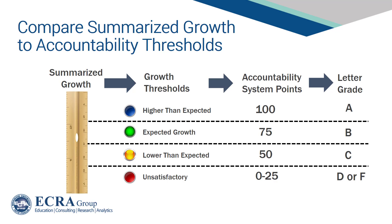Existing publications suggest growth is likely to be on a 0 to 100 point scale. Growth will likely be categorized by comparing summarized growth to growth thresholds to determine whether growth is higher than expected, expected, lower than expected, or unsatisfactory, although these labels will likely be different. There are also documents published by ISBE that suggest growth will be reported as a letter grade of A through F to capture a school's growth compared to schools with similar local contexts.